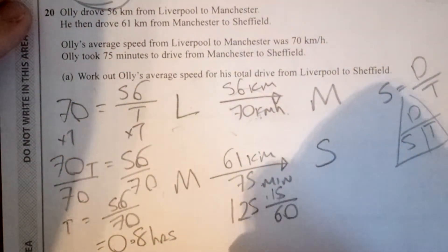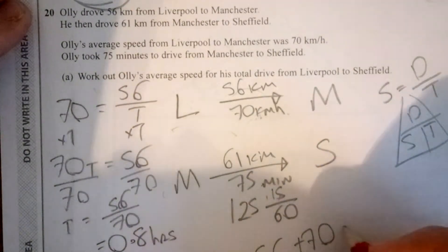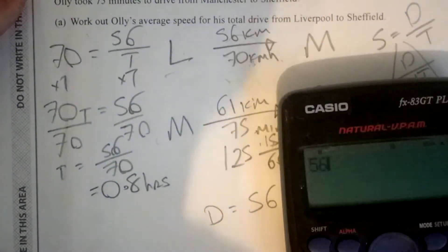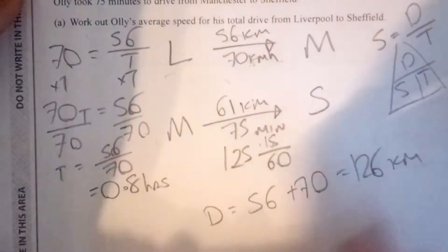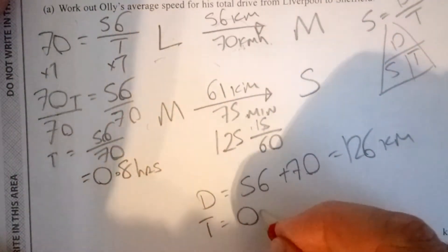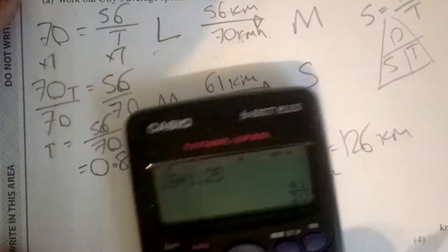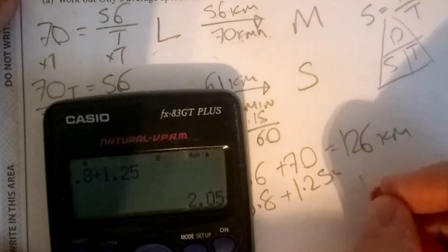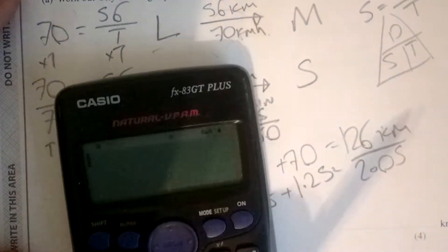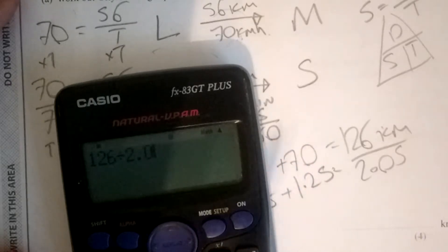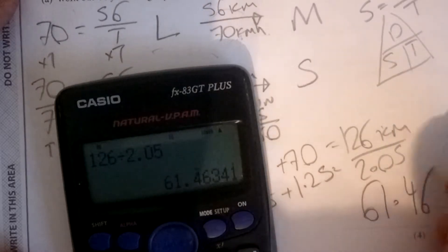It's important to keep everything in hours. For my total distance, I do 56 plus 61, which gives 117 kilometres. For my total time, I do 0.8 plus 1.25, which equals 2.05 hours. Speed equals distance over time, so 126 divided by 2.05 gives 61.46 kilometres per hour, rounded to two decimal places.